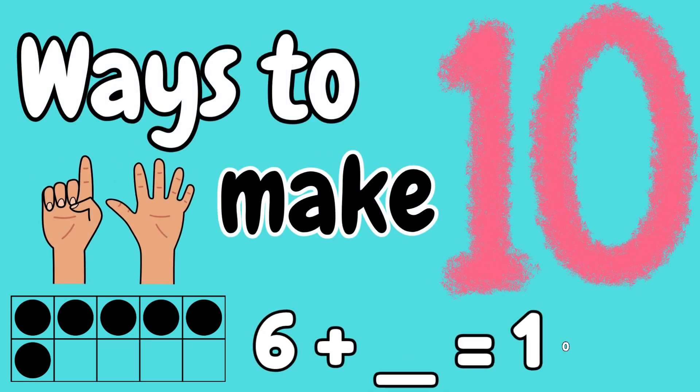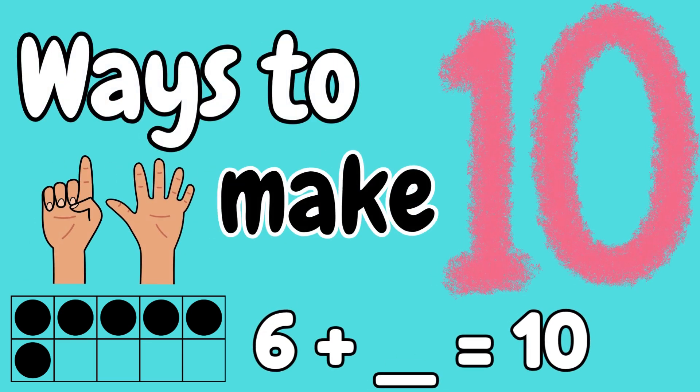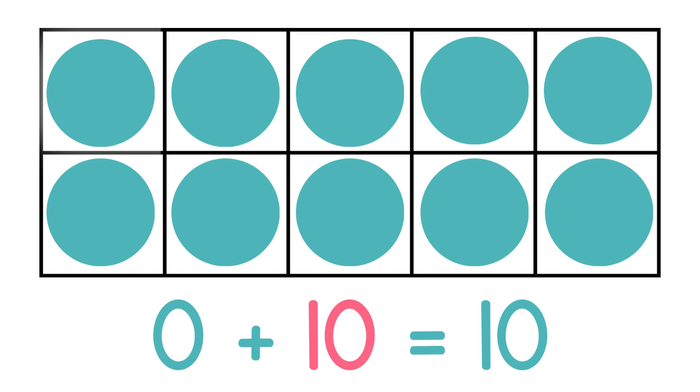Ways to make 10. Do you see these 10 squares? Right now I have 0 circles in the squares. In order to get to 10, how many circles would I need? I would need 10 circles. 0 plus 10 is 10.